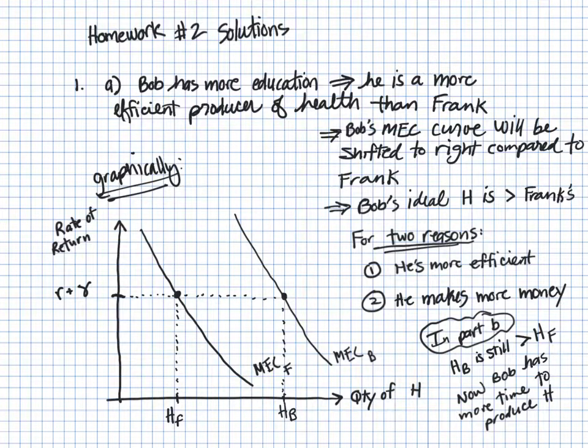For Part B, the ultimate answer is still the same, in that Bob is still going to have a higher level of health capital than Frank, but the reason is just slightly different. The main difference now is that if they're both working enough hours to make $50,000 per year, Bob's greater education allows him to earn this amount of money in far fewer hours, so now he has extra time to devote to producing H.